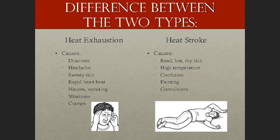The difference between the two types of heat-related illnesses — there are primarily two. The first is heat exhaustion, which is literally the precursor to heat stroke. Heat stroke is much more serious and it's potentially life-threatening.